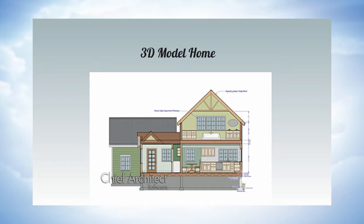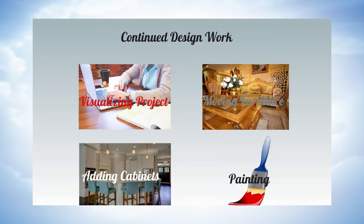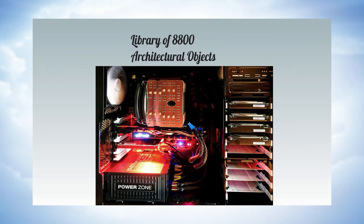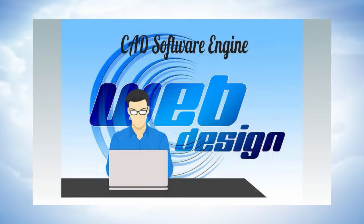Home Designer can automatically create a three-dimensional model of your home. In 3D mode, you can add cabinets, place furniture, paint walls, or just visualize your project. There are 8,800 architectural 3D objects, making it easy so that styles, finishes, and other design details can be chosen from 3,600-plus plants.